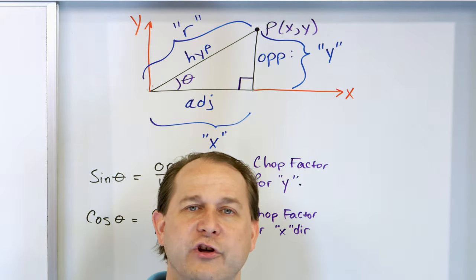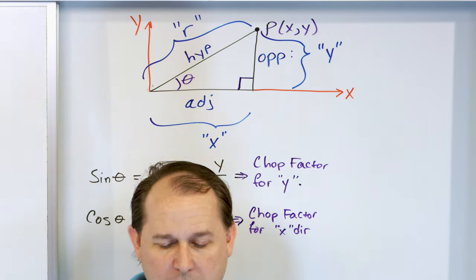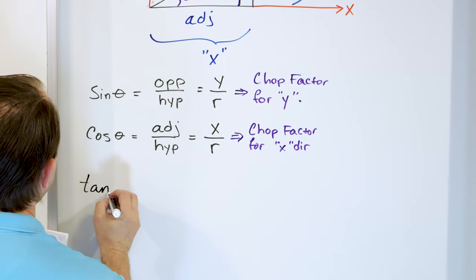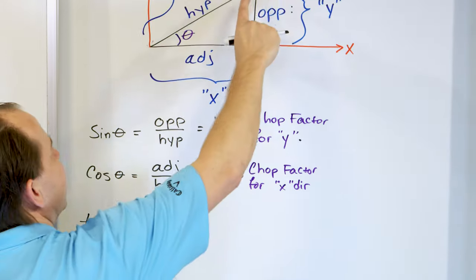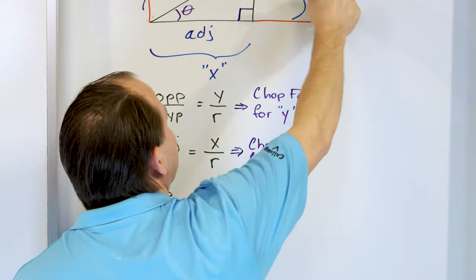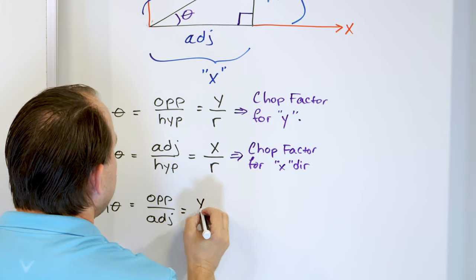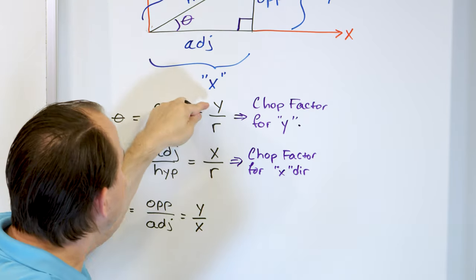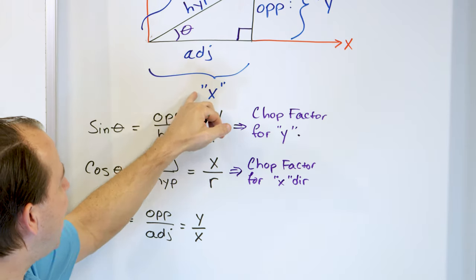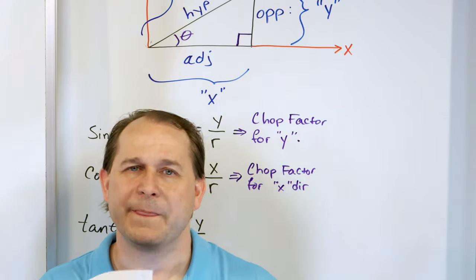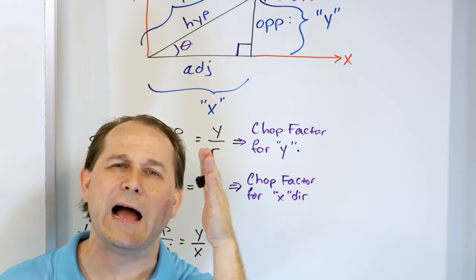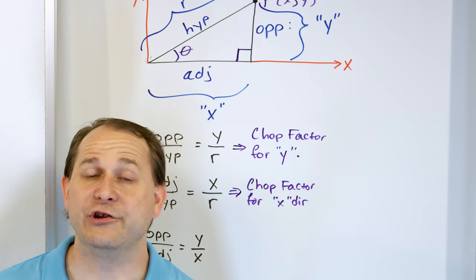Sine goes with the Y direction; cosine always goes with the X direction — that is something you must remember. Now that we know sine and cosine, we need to talk about the tangent function. The tangent of angle theta is defined as the opposite side divided by the adjacent side, which is Y over X.